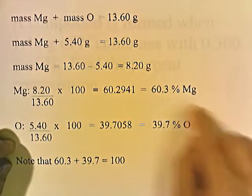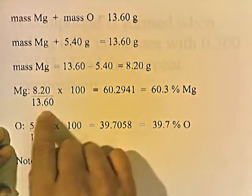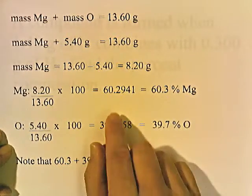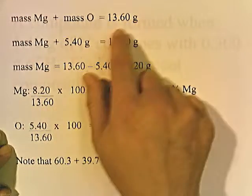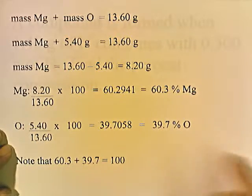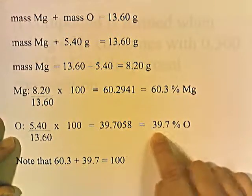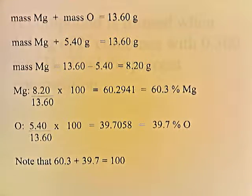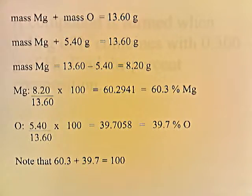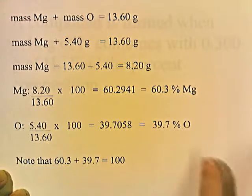The amount of magnesium in our sample is 8.2, and the total mass of the sample is 13.6. So 8.2 divided by 13.6 times 100 is 60.3%. The amount of oxygen is 5.4 — 5.4 divided by 13.6 times 100 gives 39.7%. Our sample has 60.3% magnesium and 39.7% oxygen by mass. If we had 100 grams of this sample, 60.3 grams would be magnesium and 39.7 grams would be oxygen. These percentages add up to 100. Remember that percent means per 100.